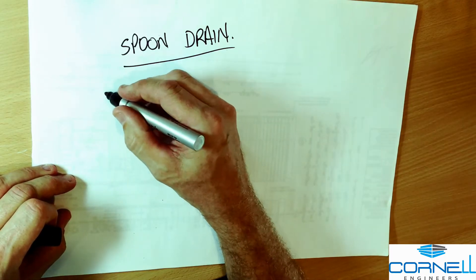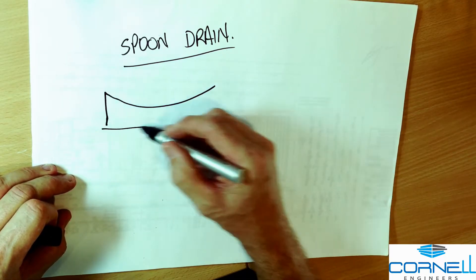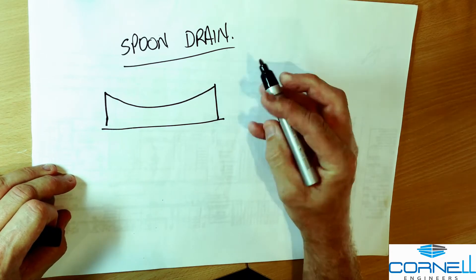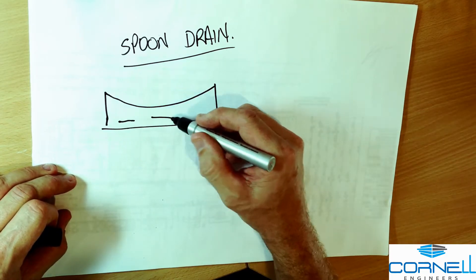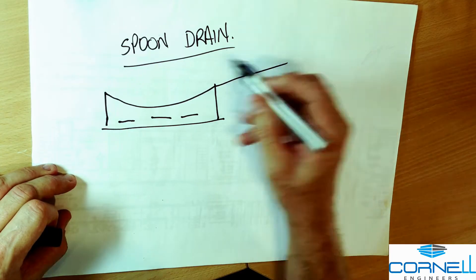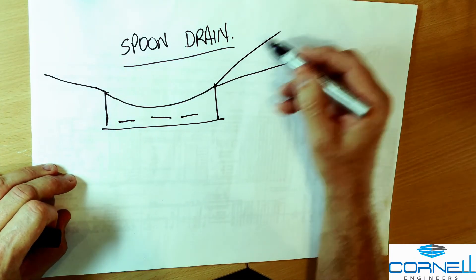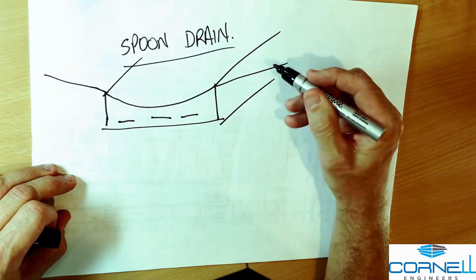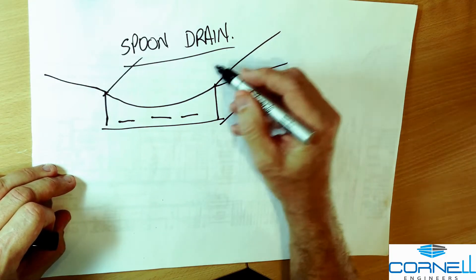So a spoon drain is a concrete drain formed in line with the ground surface and its purpose is to collect stormwater before it can soak into the ground.